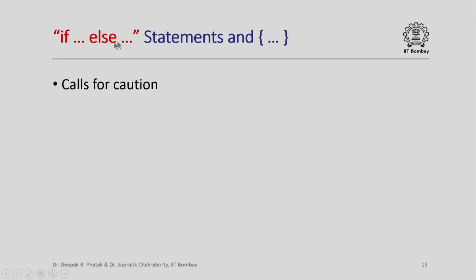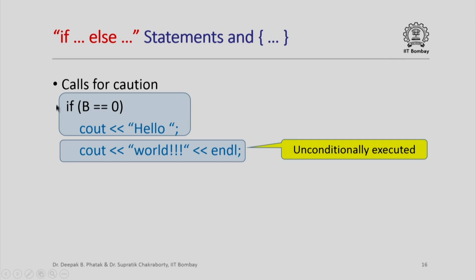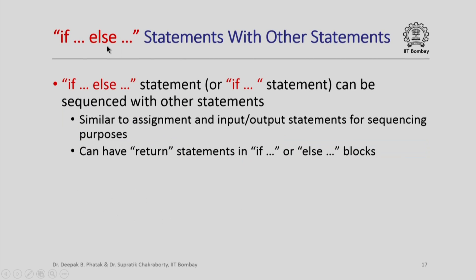Braces must be used carefully when writing if-else statements. For example, perhaps the intent is to print "hello world!!!" only if b is 0. However, if the program is written without proper braces, this block would be construed as an if statement without an else, and the last output statement would be unconditionally executed. So if b is 0, both "hello" and "world" would be printed; but if b is not 0, only "world" would be printed. If-else statements can also be combined with other statements, similar to assignment and input-output statements.